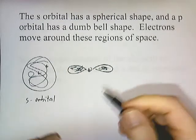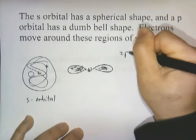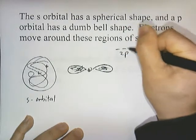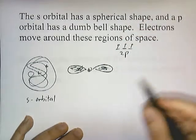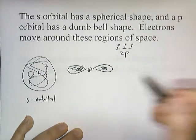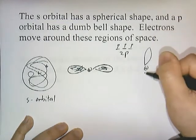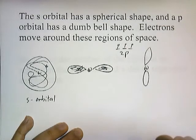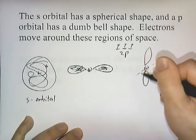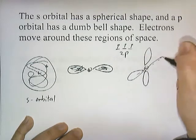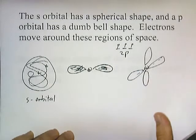Remember, the P orbital has three orientations. Every time when we draw an electron configuration and we have a P, there are always three lines above it — meaning three different orientations. There's left and right, there's also up and down, and then there's also an orientation where it comes out towards you — I won't draw that one. Three different orientations for the three different P orbitals.